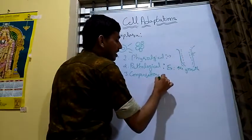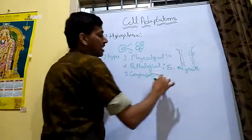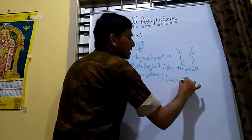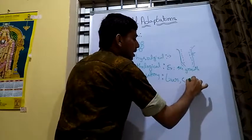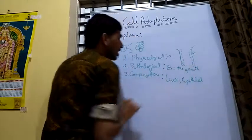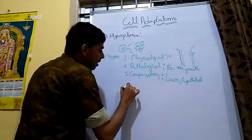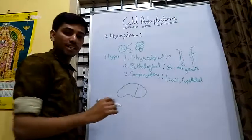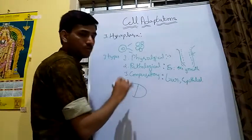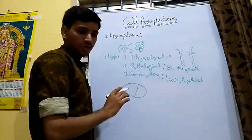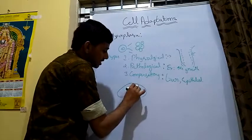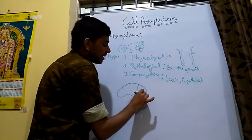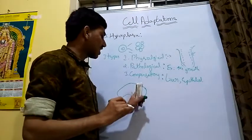Compensatory hyperplasia is especially seen in liver cells and epithelial cells. In liver cells, when the damaged part is surgically removed, after surgery the other normal cells are hyperplasiated — they divide and regenerate the liver.